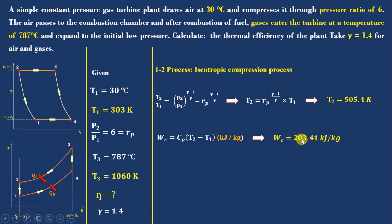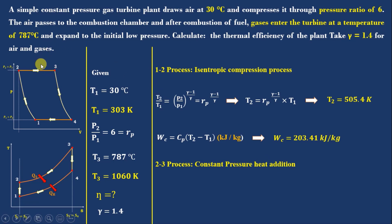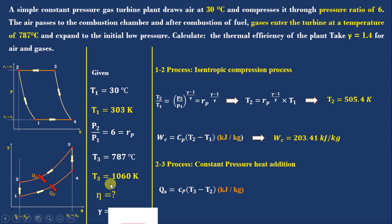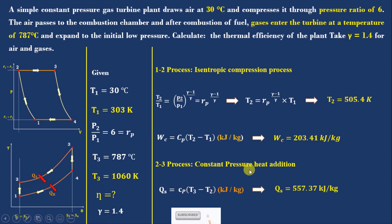Next is process 2-3: constant pressure heat addition in the combustion chamber. We find the amount of heat given to the air: Qs = Cp(T3 − T2). T3 is given and T2 was found. Then Qs = 557.37 kJ/kg of air.